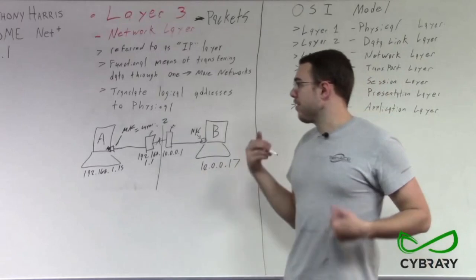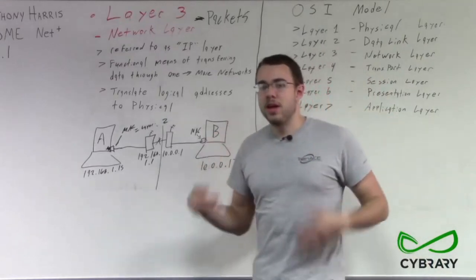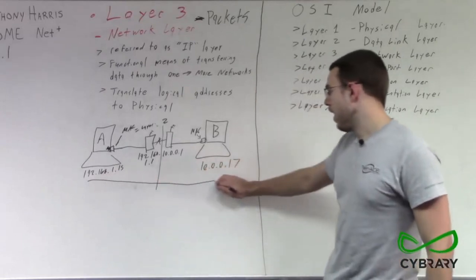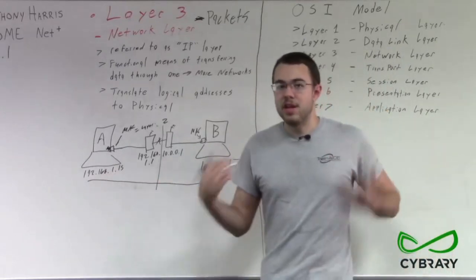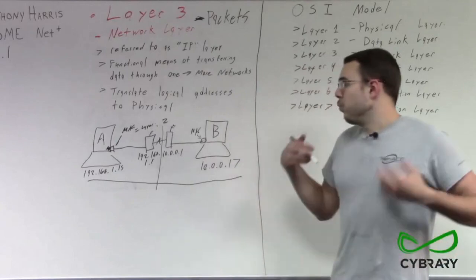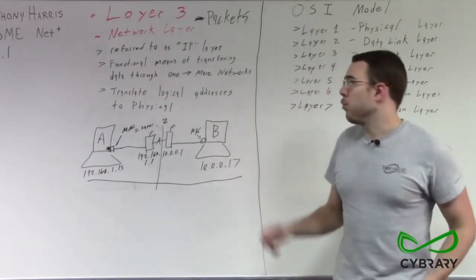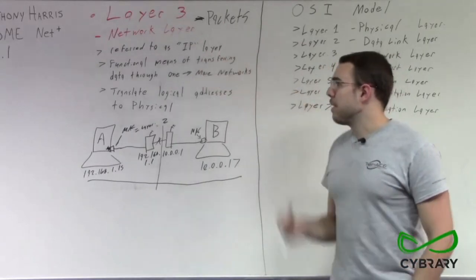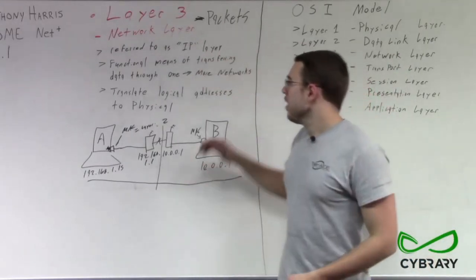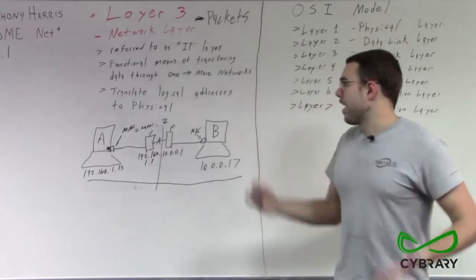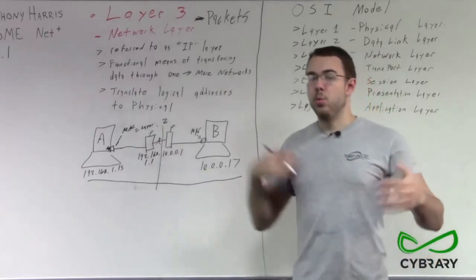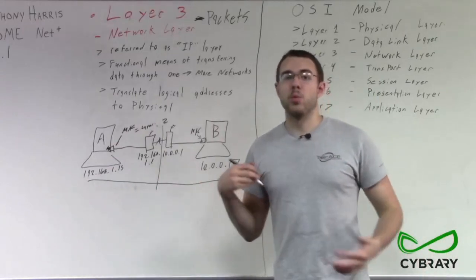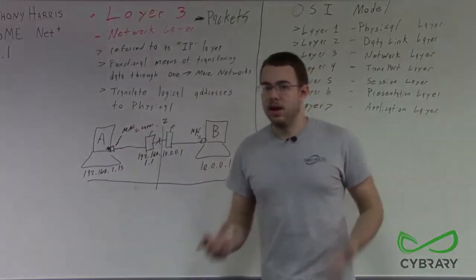This is one of the ways we can understand how layer 3 works. We are omitting a lot of steps and details here. The big things to remember about layer 3 — our network layer — are that it's also referred to as our IP layer, this is where we transmit data across one or more networks, and this is where our routers are functioning at the network layer.